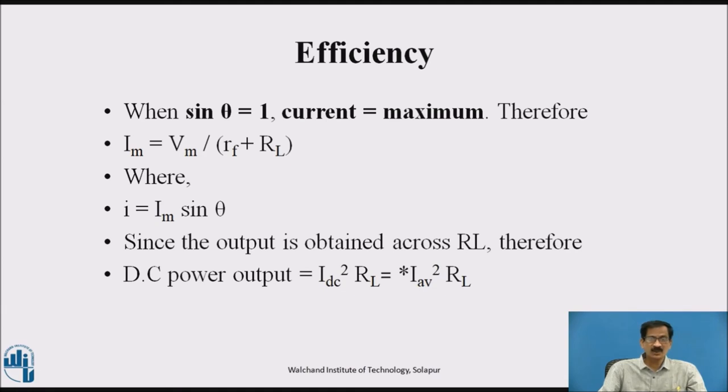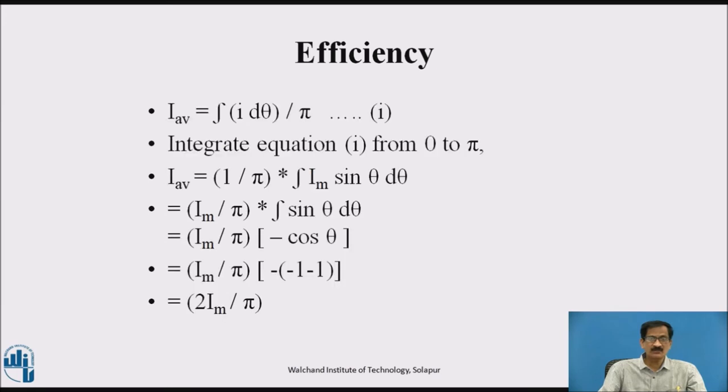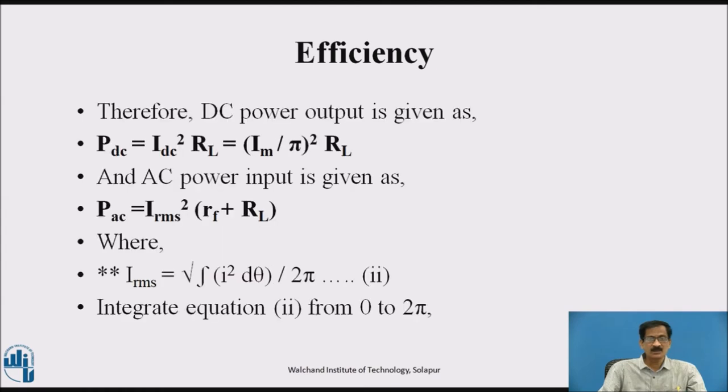Since the output is obtained across load resistance RL, therefore DC power output equals I square DC times RL equals I square average into RL. Let us derive the equation for the average value for full wave rectifier. I average mathematically can be expressed as integration of I d theta upon pi. Integrating equation from 0 to pi, I average equals 1 upon pi integration of Im sin theta d theta equals Im upon pi integration of sin theta d theta equals Im upon pi into bracket minus cos of theta.